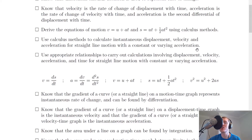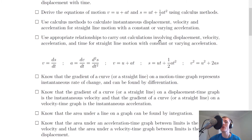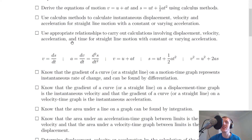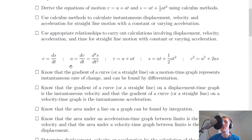That will either be using differentiation or integration, depending on what you're asked to find. Use appropriate relationships to carry out calculations involving displacement, velocity, acceleration, and time for straight line motion with constant or varying acceleration. So you should be able to use all of these equations: v equals ds by dt, that's velocity equals the rate of change of displacement; acceleration a equals dv by dt, which equals d squared s by dt squared; and the three equations of motion: v equals u plus at, s equals ut plus a half at squared, and v squared equals u squared plus 2as.